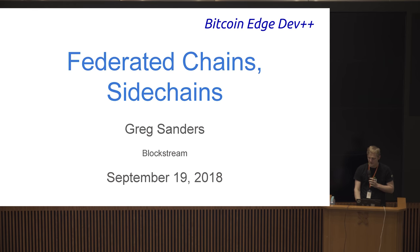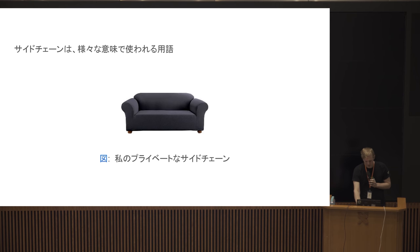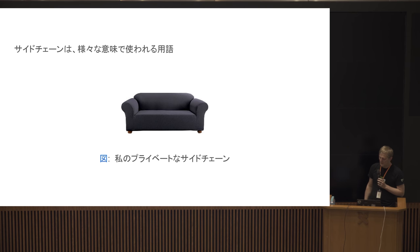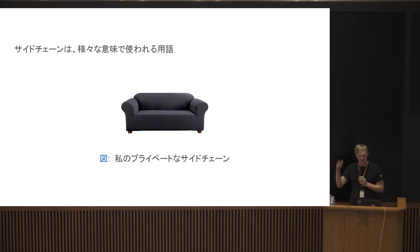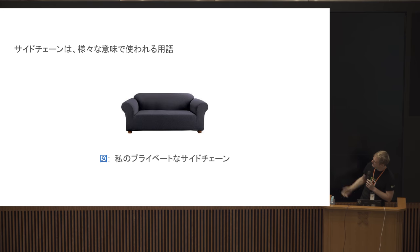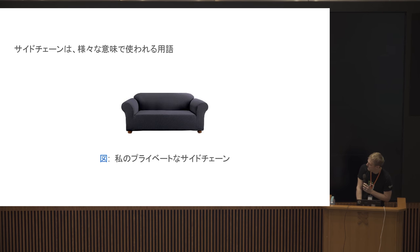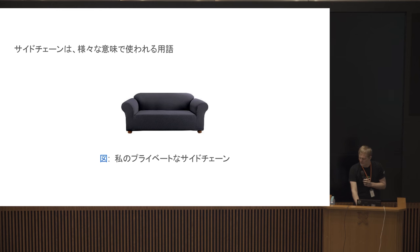This talk is about side chains and federated chains — things I've been working on for the last couple of years or so. The word 'side chain' is quite overloaded. There's a famous parody white paper that some professor in South America did — 'my couch is a side chain, here's my private side chain.' I'll explain the high-level concepts at a 50,000-foot view: what these are, what they give you, and the different flavors deployed in the last year or so.